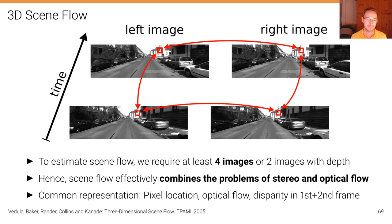Well, to estimate scene flow, we require at least four images, namely a stereo image pair at time t and a stereo image pair at time t plus one.